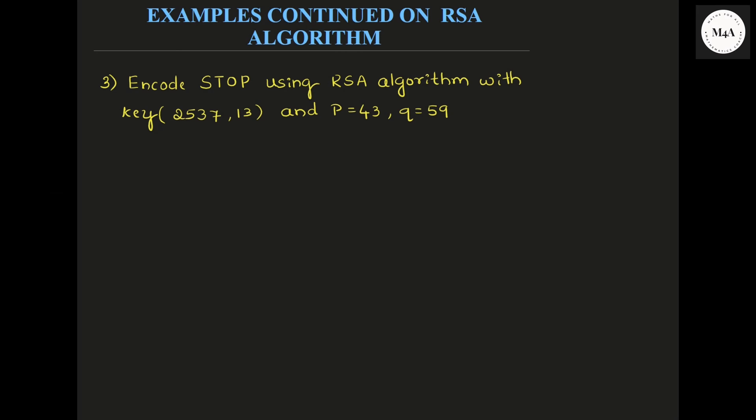Hello students, welcome to class. In this class, I am going to continue with some more examples on RSA algorithm. So this is one example: encode 'STOP' using RSA algorithm with key 2537 and 13, and P is 43 and Q is 59. This is key 1.